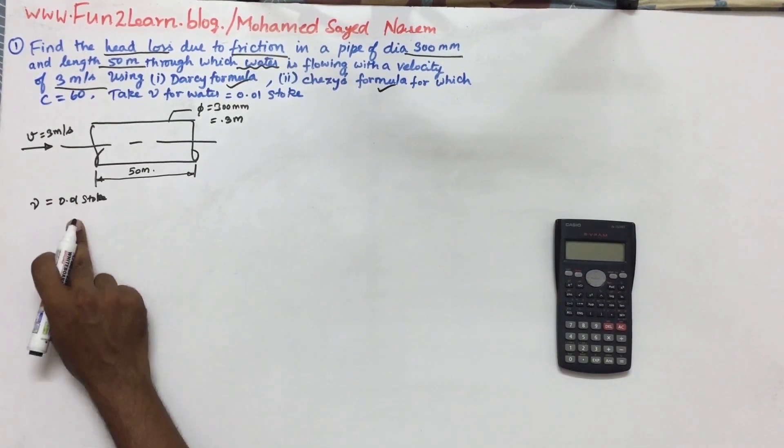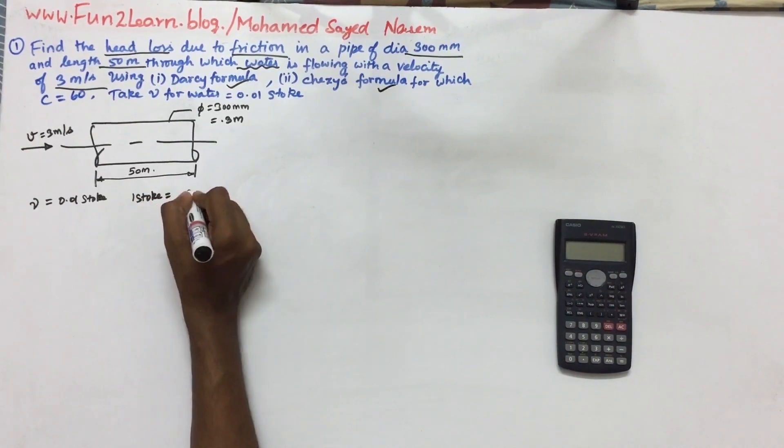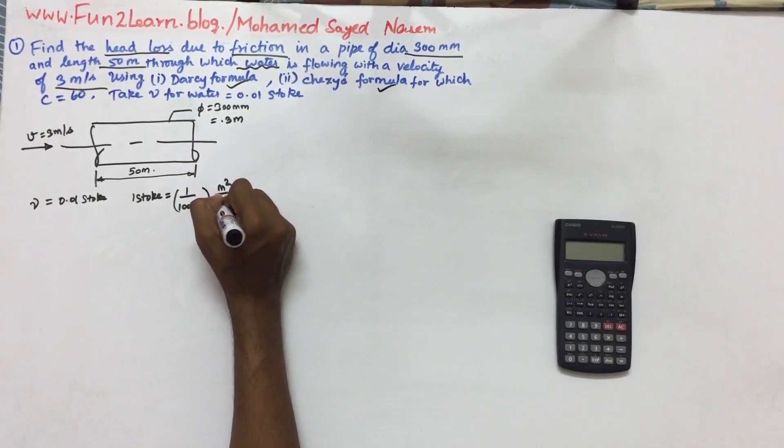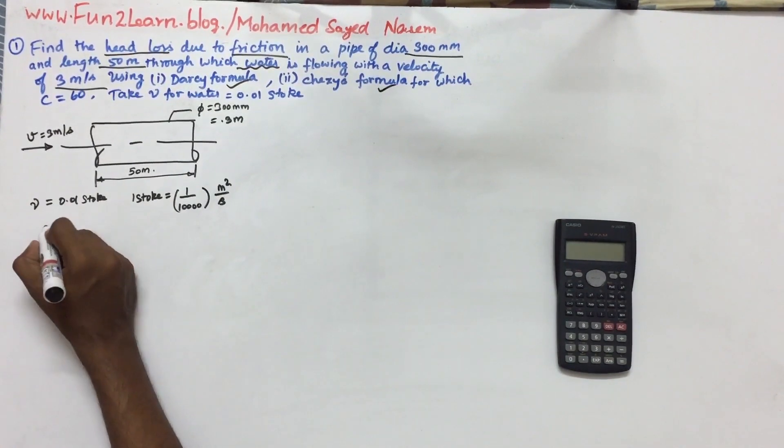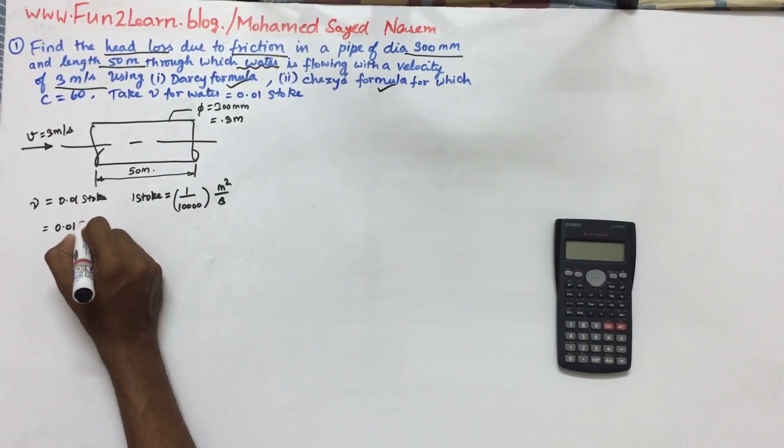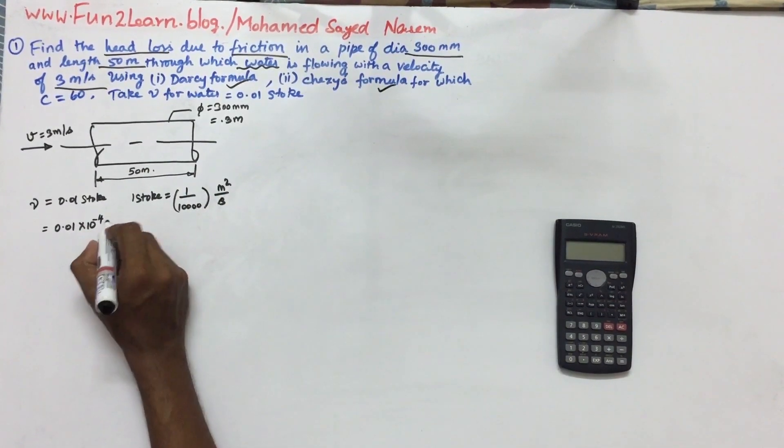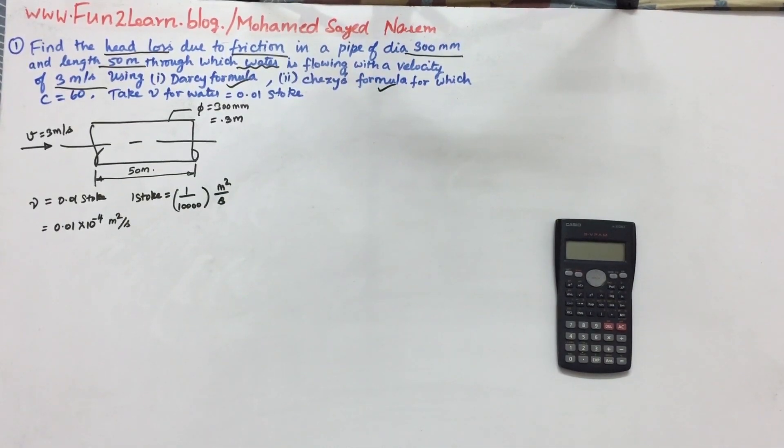One stoke is equal to 1 by 10,000, which is 10 power minus 4 meters squared per second. So this is 0.01 into 10 power minus 4 meters squared per second.